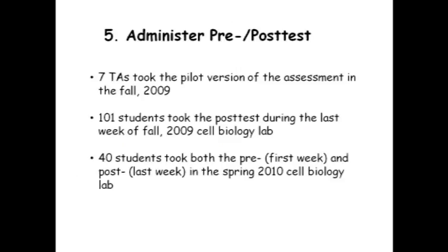And how do we administer? Getting back to Sandra's question: 78 took the pilot version of the assessment, and we found about 57% of students don't understand positive control, and 40% failed to recognize negative control. The same observation was observed for the students — basically whether it's a long version or short version, we find a very similar pattern. Students in fall cell biology lab took the post-test and had similar results as the TA.